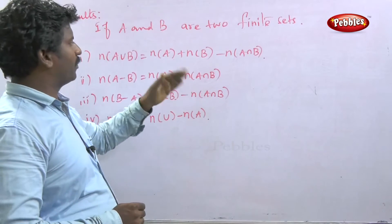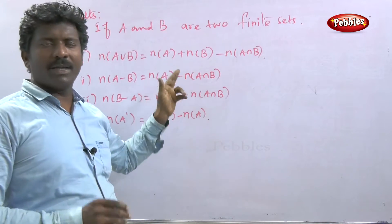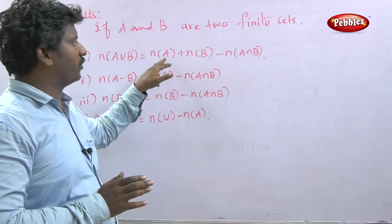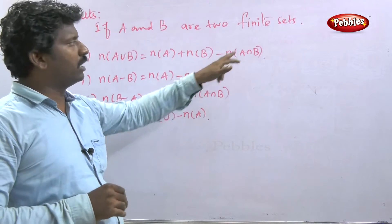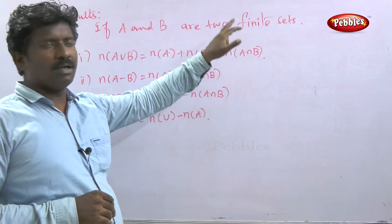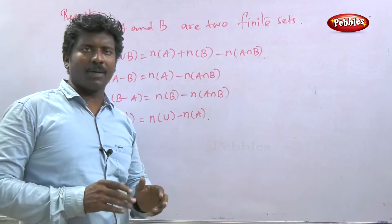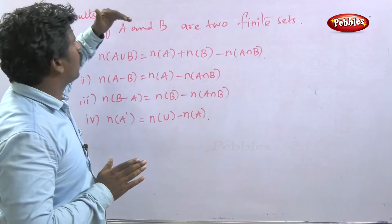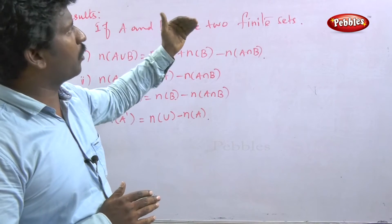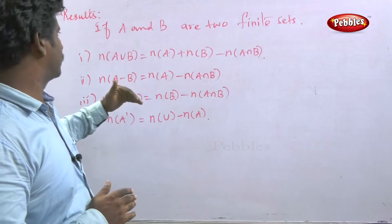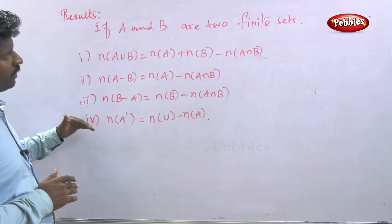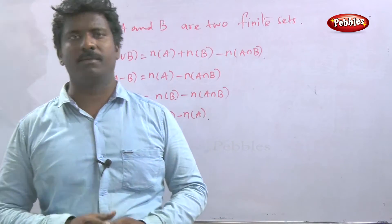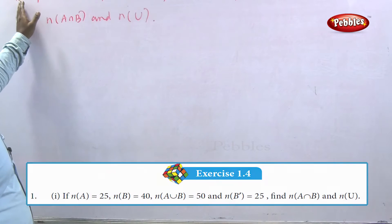Cardinality refers to the number of elements in a set. For example, if a set has nine elements, the cardinality is nine. If A intersection B has certain elements, that count is the cardinality of A intersection B. These four formulas must be studied carefully, as they form the basis for solving any problem in this topic.